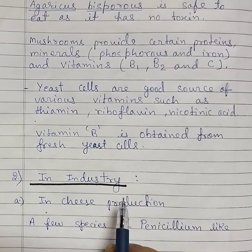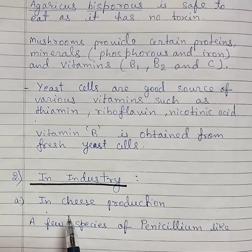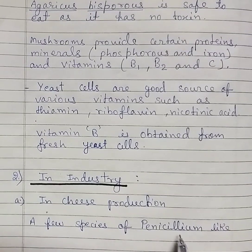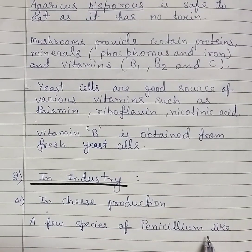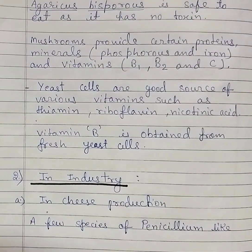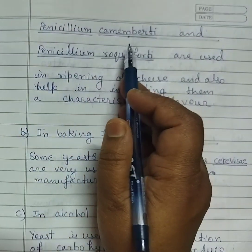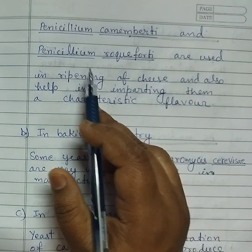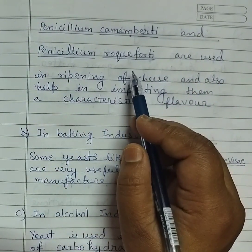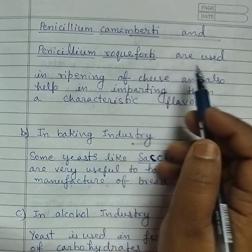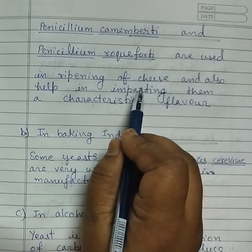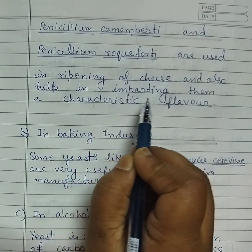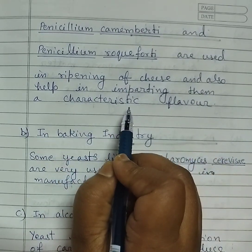Second, in industry. In cheese production, a few species of Penicillium like Penicillium camembertii and Penicillium roqueforti are used in ripening of cheese and also help in imparting them a characteristic flavor.